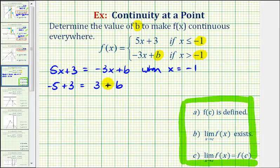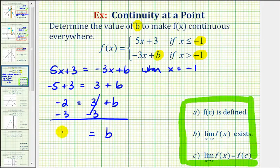Now, we'll simplify and solve for b. Negative 5 plus 3 is equal to negative 2. Subtract 3 on both sides. And we have b equals negative 5.